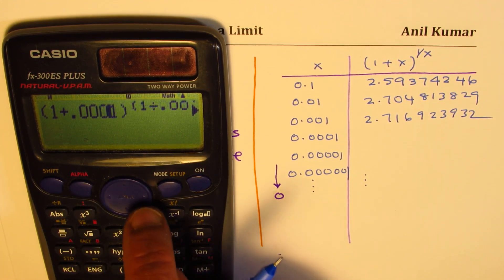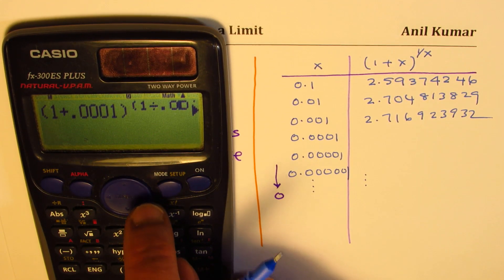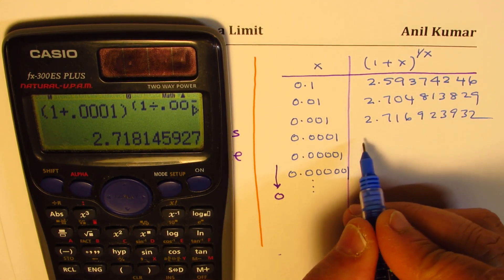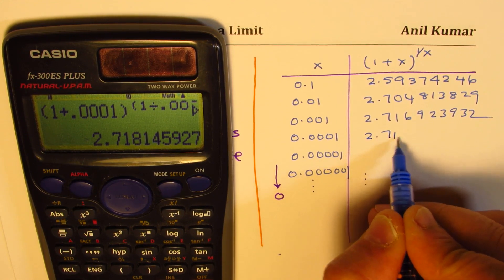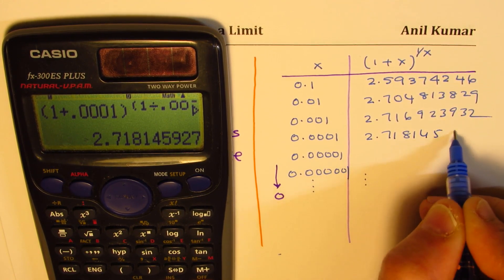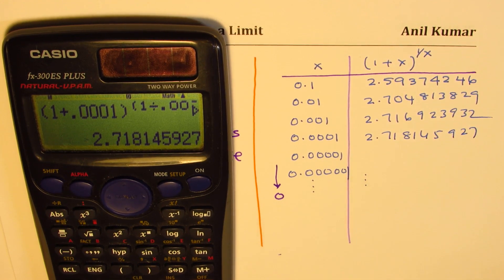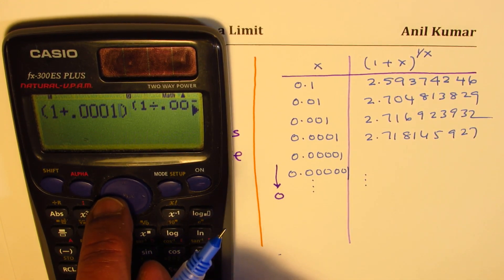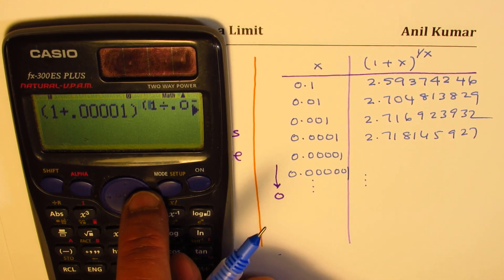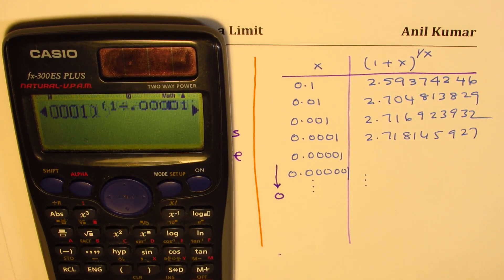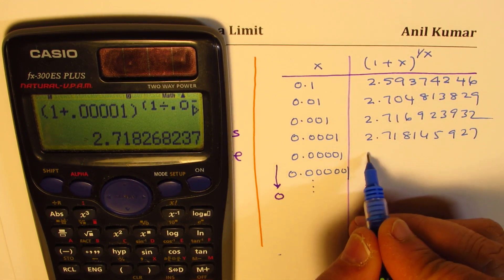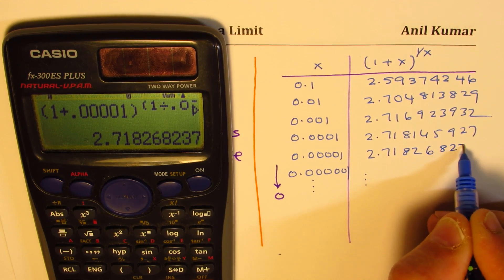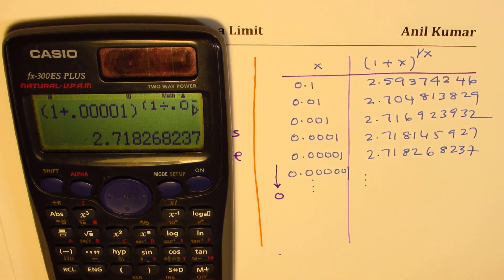We are getting actually closer to 0 — the limit is to go as close as you can. With 0.0001 it's 2.718145927. Adding one more zero, we get 2.718268237.